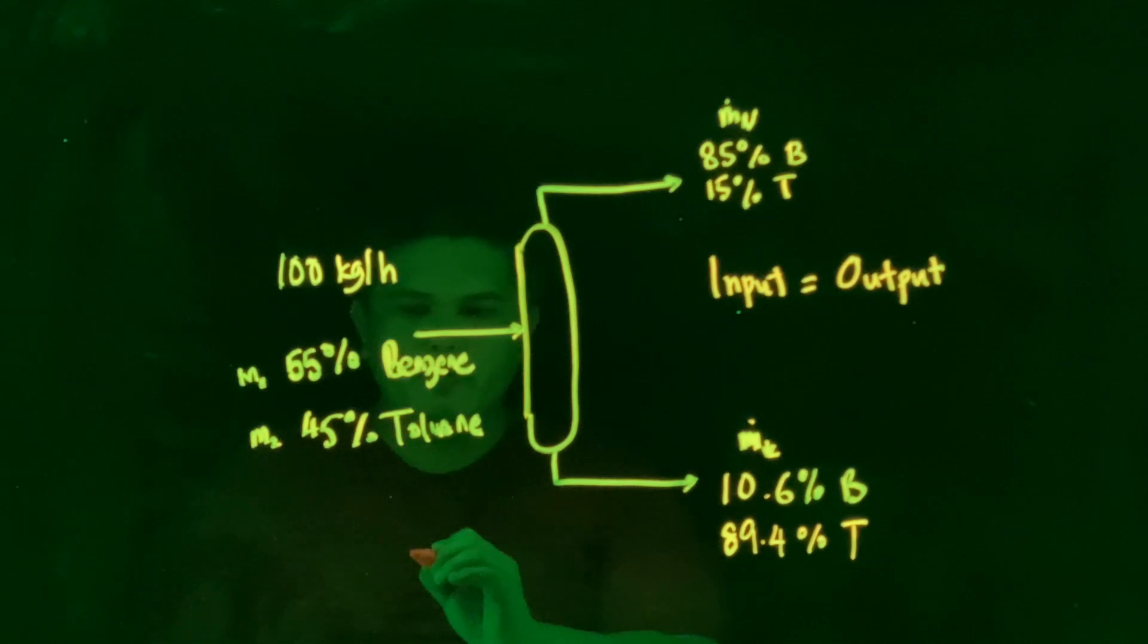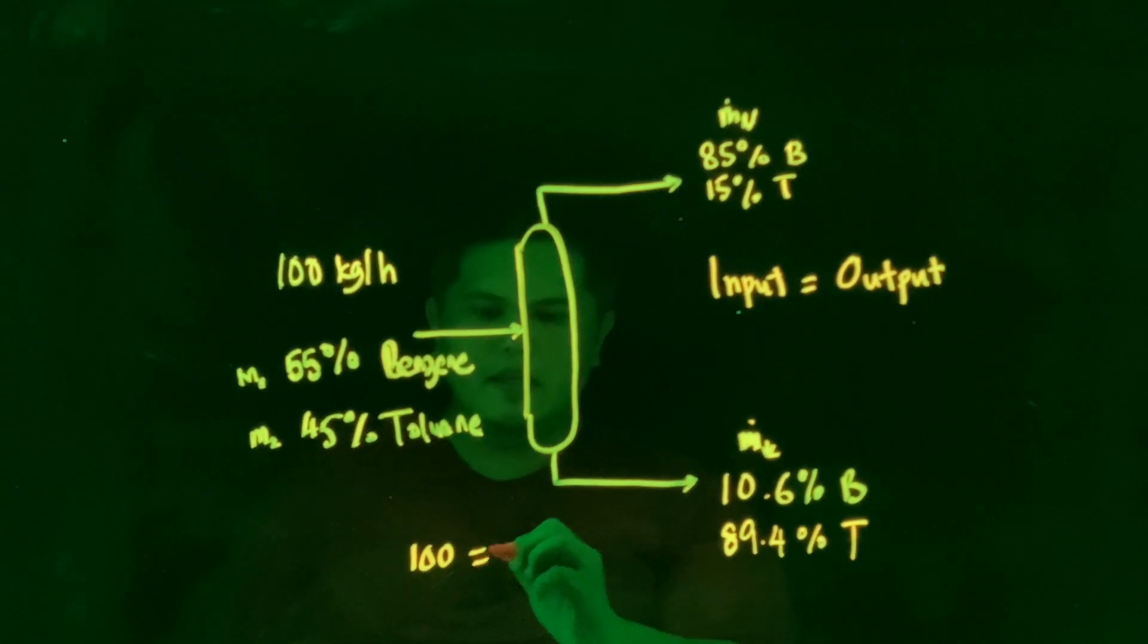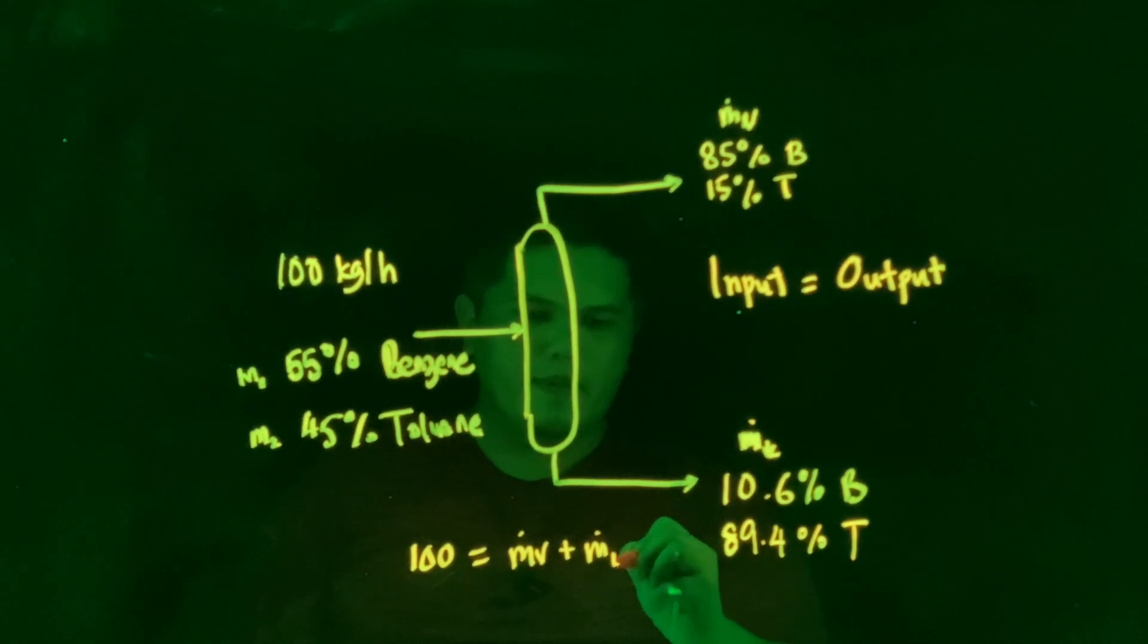So what you supposed to do first of all is to write the equation: 100 equals to MV plus ML. This is our first equation.